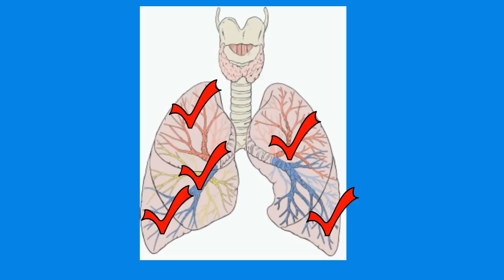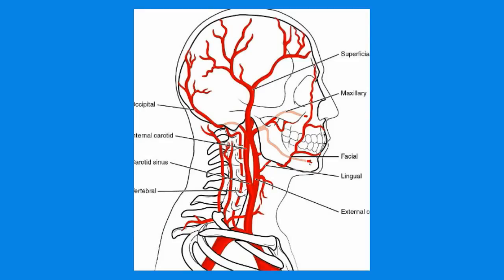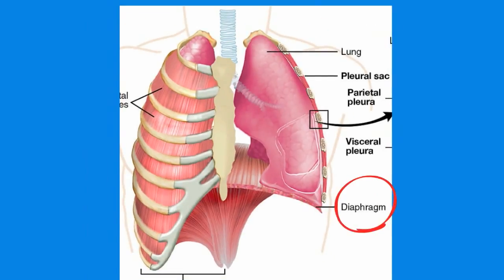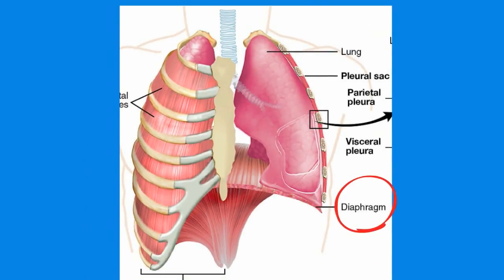Your autonomic nervous system controls the rate that your lungs inflate and deflate. The lungs inflate with the help of an expanding rib cage and a muscle called the diaphragm. When the diaphragm moves down, the lungs inflate, and when the diaphragm moves up, the lungs deflate.